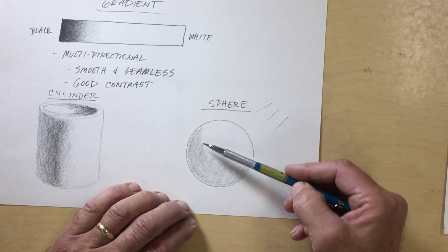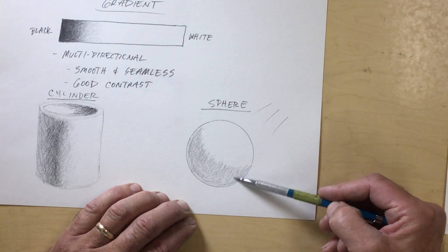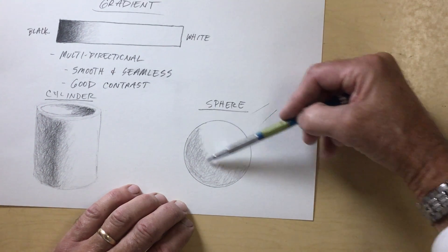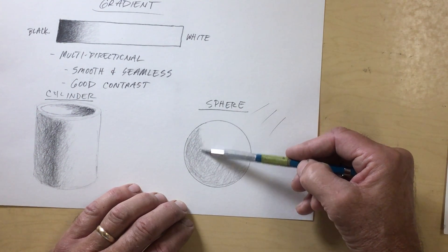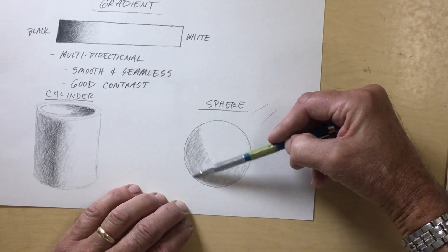And I want to blur the leading edge of it, the edge towards the light source. I want to make that kind of irregular. You don't want to have it be a solid line. You want a broken edge there so it looks like it's fading out.